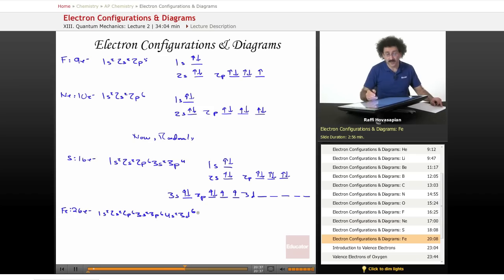These are going to start to get kind of long, so I'm going to introduce with iron a shorthand notation. This is the same as, I can write this as argon, 4s2, 3d6.